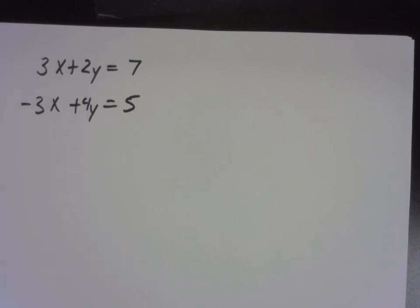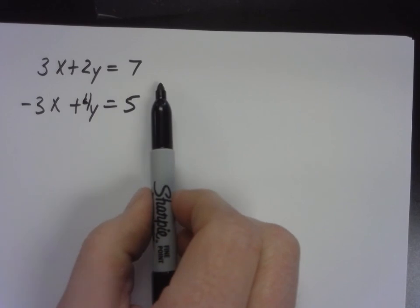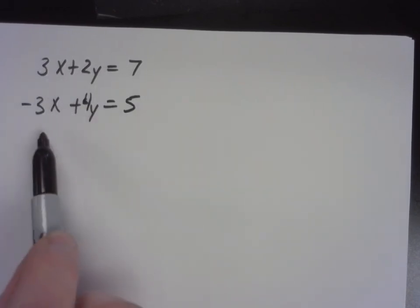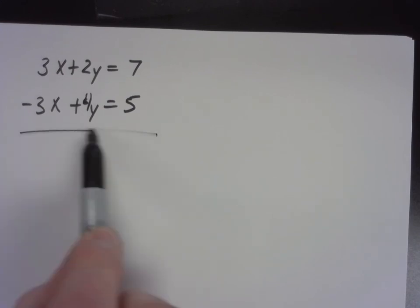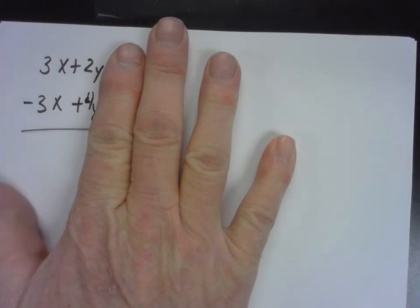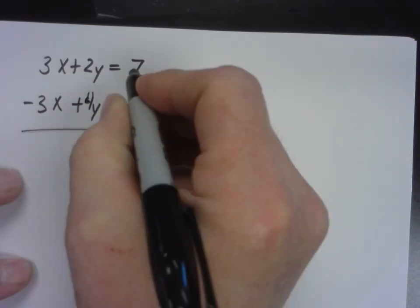Which is okay, we can do that, but it's kind of bad. But the idea with elimination is, if we have them in the same form, which usually we like them to be in standard form like this, we can just add each side of the equations together. I can add these sides together. What's 3x plus negative 3x? Zero. And then 2y plus 4y. And 7 plus 5.